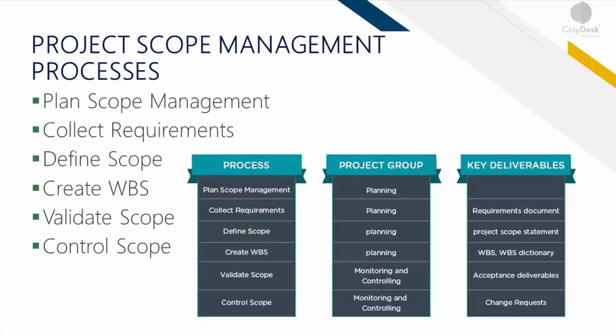The scope management processes: first, plan scope management — the process of creating a scope management plan that documents how the project and product scope will be defined, validated, and controlled. The collection of requirements is simply the process of determining, documenting, and managing all stakeholder needs and requirements to meet the desired objectives. Everything is documented, so if you have a well-scoped-out plan, it's easier to manage and execute.